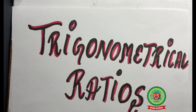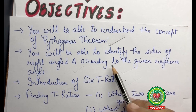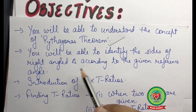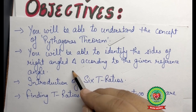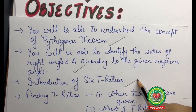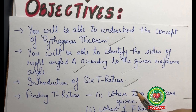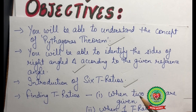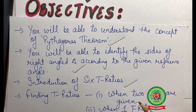Hello students, welcome back for another video on the topic of trigonometrical ratios. In our previous video we discussed Pythagoras theorem and how to identify the sides of a right-angled triangle according to a given reference angle. In this video we are going to discuss the six trigonometrical ratios and solve a sum based on finding them when all three sides are given. But before proceeding, let us have a recap of what a ratio is and the names of the three sides of a right-angled triangle.